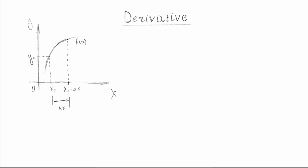Because for our initial value, we just added another value that we called delta x. So that means this length is equal to delta x — we changed our initial value by delta x. So here we will have x0 plus delta x as a new value, and of course for that new value it will be y0 plus delta y.